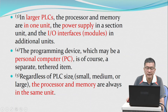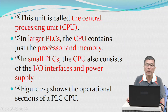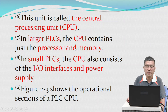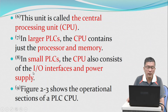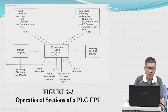Regardless of PLC size — small, medium, or large — the processor and memory are always in the same unit. This unit is called the central processing unit, or CPU. In larger PLCs, the CPU contains just the processor and memory. In small PLCs, the CPU also consists of the I/O interface and the power supply. Figure 2.3 shows the operational section of a PLC CPU.